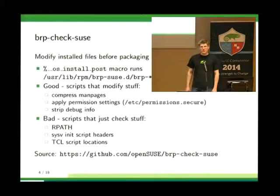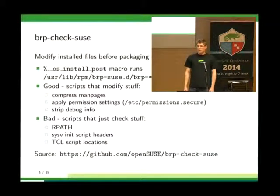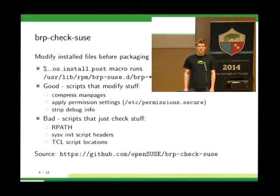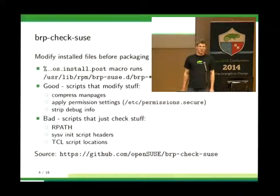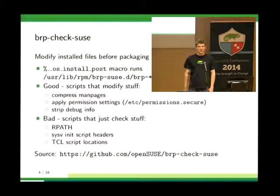Some examples of BRP check scripts: the oldest is probably the one that compresses man pages — it runs gzip on all your man pages before they get packaged. Another is the permissions check, which uses settings from /etc/permissions.secure and changes listed files so they are always packaged with secure permissions in the RPM itself, so even without the SUSE permission system installed, they would have conservative permissions. Another typical BRP script strips debug information from binaries before they end up in the package or puts them in a sub-package.